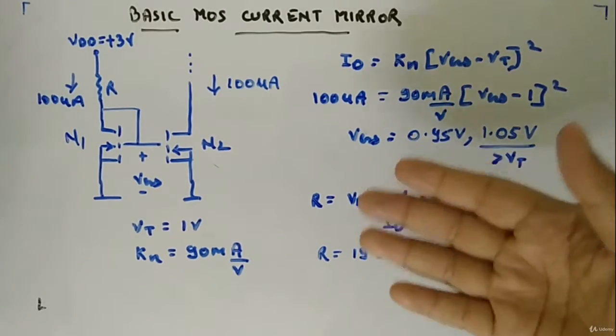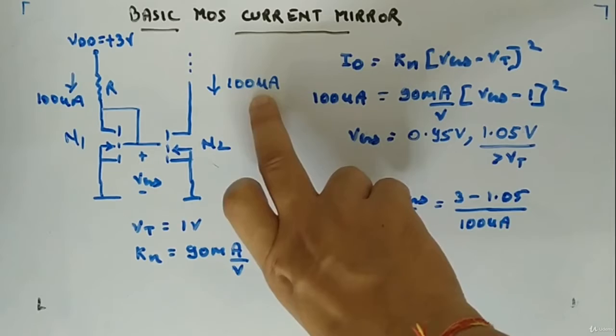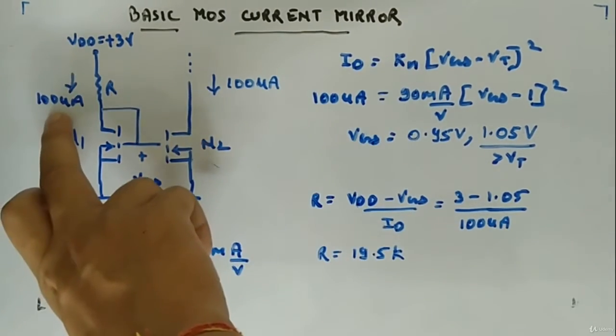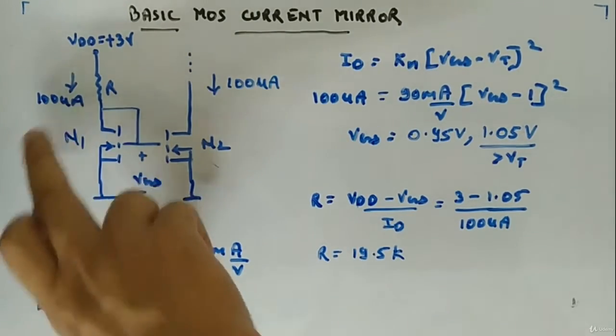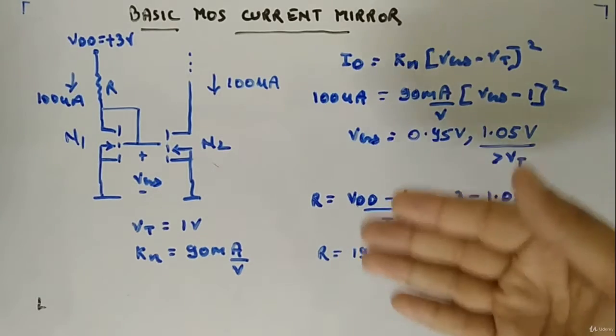Now design criteria: what is the criteria? We want this current to be hundred microampere, which means this current should be hundred microampere. They will be in saturation by default, the MOSFETs.